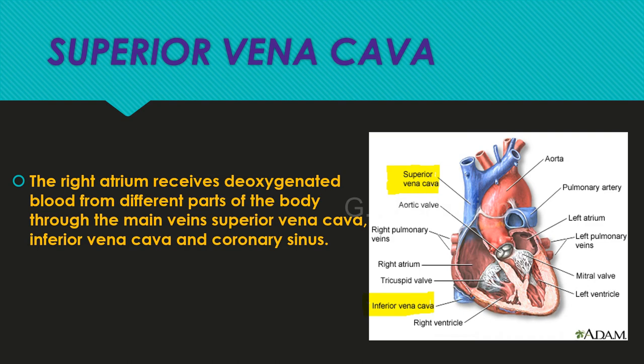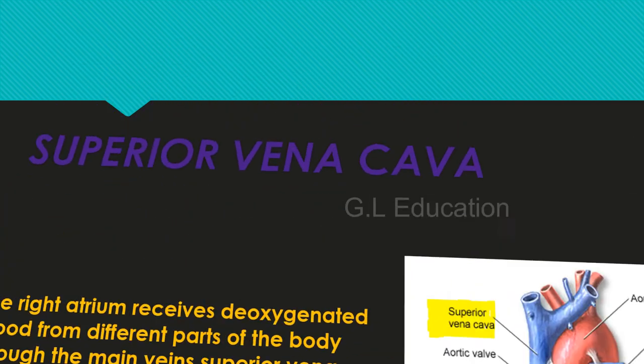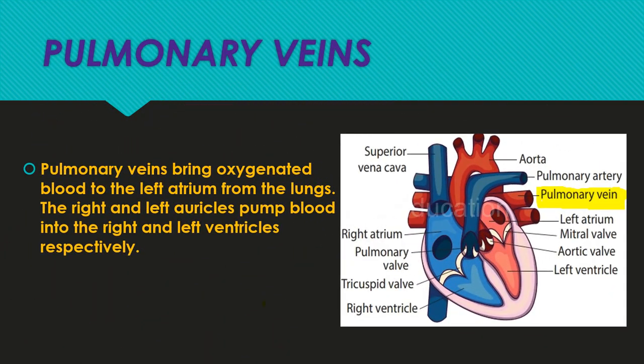Superior vena cava: the right atrium receives deoxygenated blood from different parts of the body through the main veins — superior vena cava, inferior vena cava, and coronary sinus. Pulmonary veins bring oxygenated blood to the left atrium from the lungs. The right and left auricles pump blood into the right and left ventricles respectively.